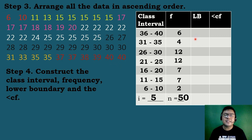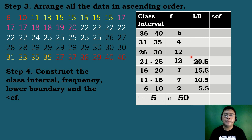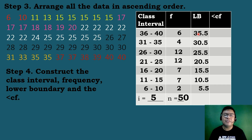To find the lower boundary, we subtract 0.5 from each lower limit. So: 6 − 0.5 = 5.5, 11 − 0.5 = 10.5, 16 − 0.5 = 15.5, 21 − 0.5 = 20.5, 26 − 0.5 = 25.5, 31 − 0.5 = 30.5, and 36 − 0.5 = 35.5.